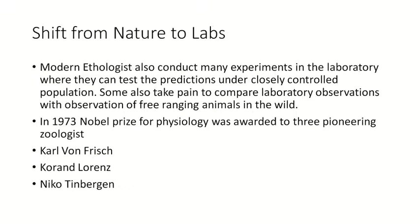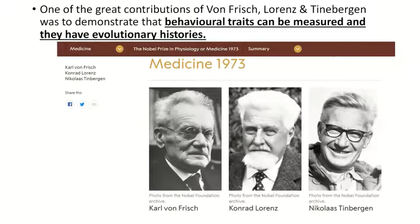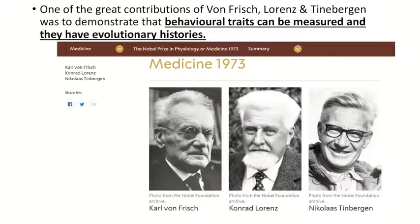The study of Ethology is so important that in 1973, the Nobel Prize for Physiology was awarded to three pioneering zoologists: Carl von Frisch, Conrad Lorenz, and Niko Tinbergen. All three scientists played a very important role in the development of Ethology. One very important fact they emphasized was that behavioral traits can be measured and they have an evolutionary history.